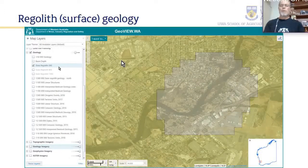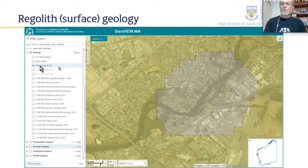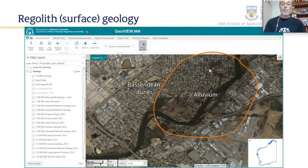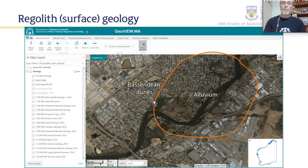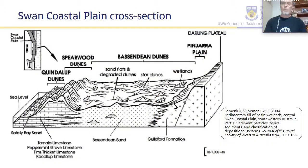Reminding ourselves of the surface geology — this is the GeoView map, the State Regolith map, showing the material overlying the bedrock. What we have is alluvium: the Regolith geology map describes this as Cenozoic age, so somewhere between 1.8 million and 0 million years old. The Bassendine dunes on this side are just called sand plain in the Regolith map.